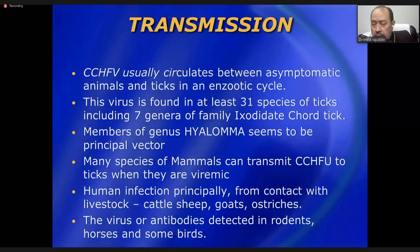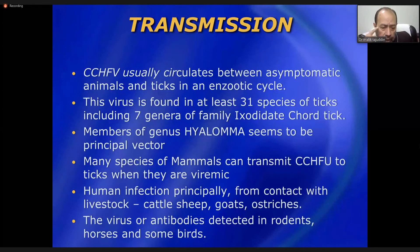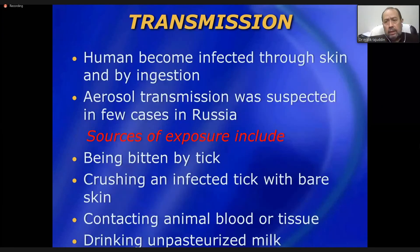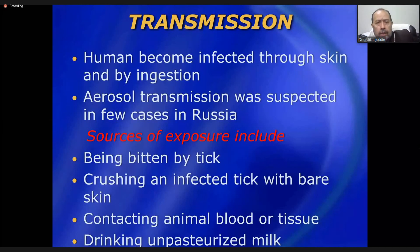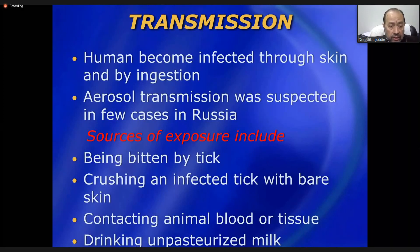The virus usually circulates between asymptomatic animals and ticks in a zoo-tick cycle — among animals without ever involving humans — and is transmitted incidentally to human beings. Many mammal species can transmit the virus to ticks. Human infection occurs principally from contact with livestock such as cattle, sheep, and goats. Virus or antibodies have also been detected in rodents, horses, and some birds. Humans become infected through skin abrasions or contact with infected material.